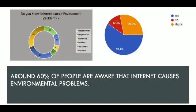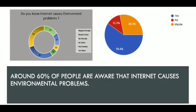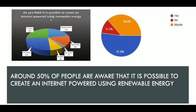Around 60% of people are aware that the internet causes environmental problems, while 40% are unaware of this fact. For instance, researchers have found that a normal email contains about 4g of carbon footprint, which is a cause of concern for the environment. From the data collected, it is observed that only 50% of people are aware that it is possible to create an internet powered using renewable energy.